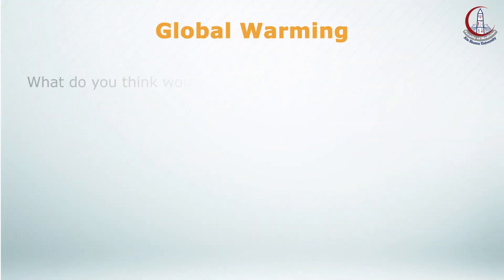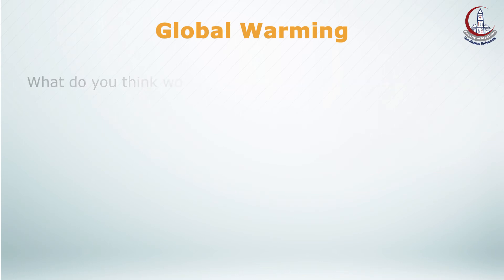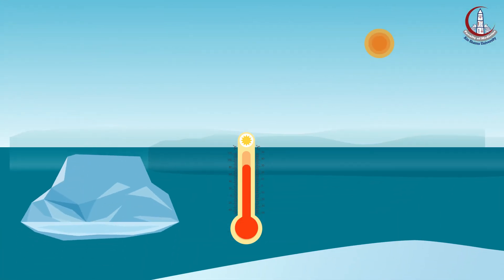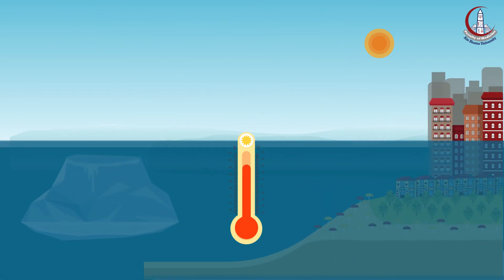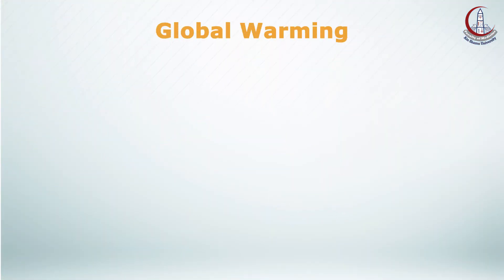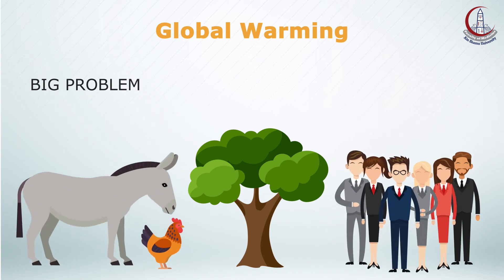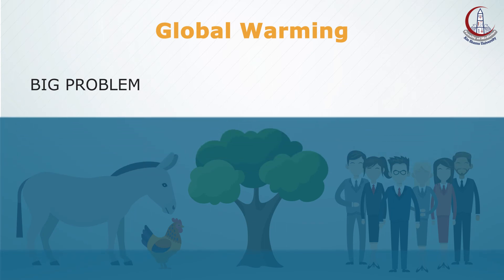So, what do you think would happen as a result of global warming? The high Earth's temperature will cause melting of ice at the north and south poles, which makes the sea level rise, and thus water will cover many low-land islands. This is a big problem for many of the plants, animals, and people living on those islands. Water will cover plants leading to their deaths.